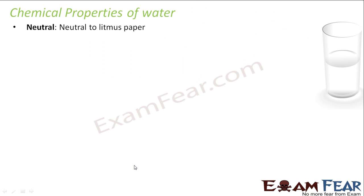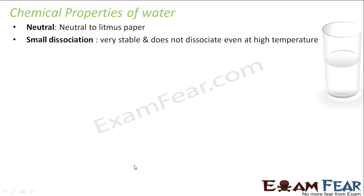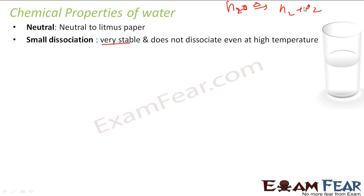Now let's look at some chemical properties of water. The first is that it is neutral to litmus paper. The second is that it has very small dissociation — it is very stable and does not dissociate even at high temperatures. You need an extremely high temperature to decompose water into H2 and O2. It is very, very stable.